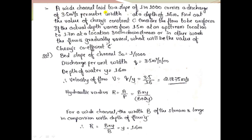Problem 3: A wide channel laid to a slope of 1 in 1000 carries a discharge of 3.5 m³/s per meter width at a depth of 1.6 m. Find the Chezy's constant assuming uniform flow. Also, if the actual depth varies from 1.5 m upstream to 1.7 m at a location 300 m downstream (gradually varied flow), find the Chezy's coefficient.